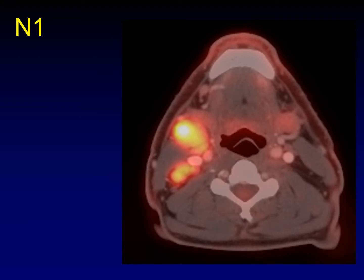Here's an N1 disease example. This is a patient with unilateral disease. Obviously it has to be on the same side as the primary tumor — unilateral ipsilateral disease within level two of the right neck. That's N1 disease.